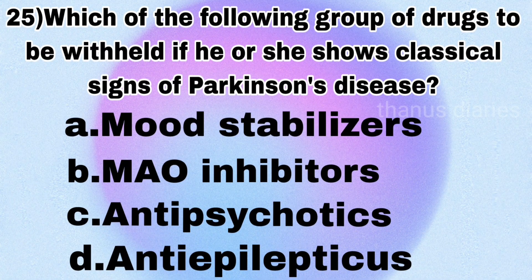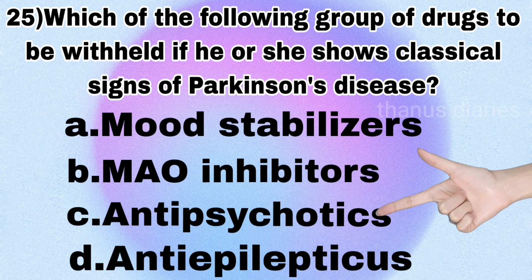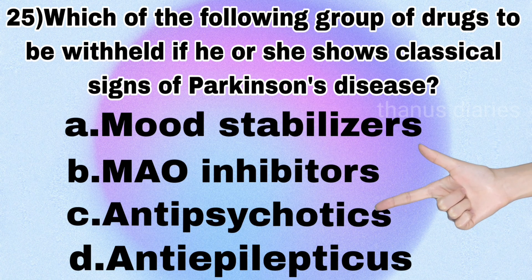Next question: which of the following group of drugs should be withheld if a patient shows classical signs of Parkinson's disease? — Mood stabilizers, monoamine oxidase inhibitors, antipsychotics, or antiepileptics? It's antipsychotics.